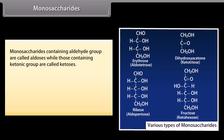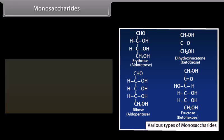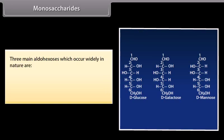Monosaccharides containing an aldehyde group are called aldoses, while those containing a ketonic group are called ketoses. They can be further classified depending upon the number of carbon atoms. Monosaccharides with 3, 4, 5, 6, and 7 carbon atoms are called trioses, tetroses, pentoses, hexoses, and heptoses respectively. The three main aldohexoses which occur widely in nature are D-glucose, D-galactose, and D-mannose. The letter D before the name of monosaccharides represents the configuration as derived from glyceraldehyde.